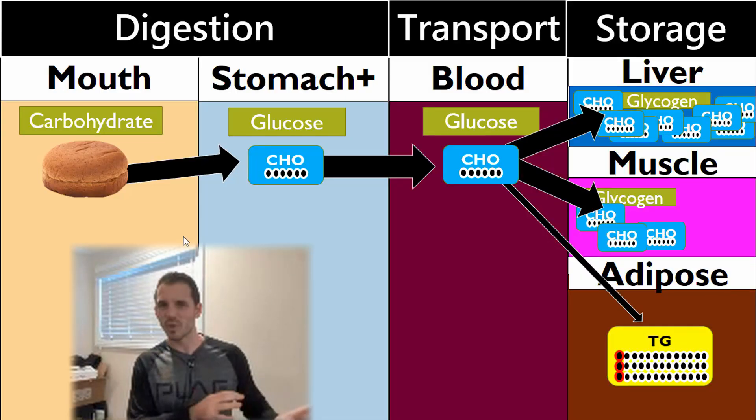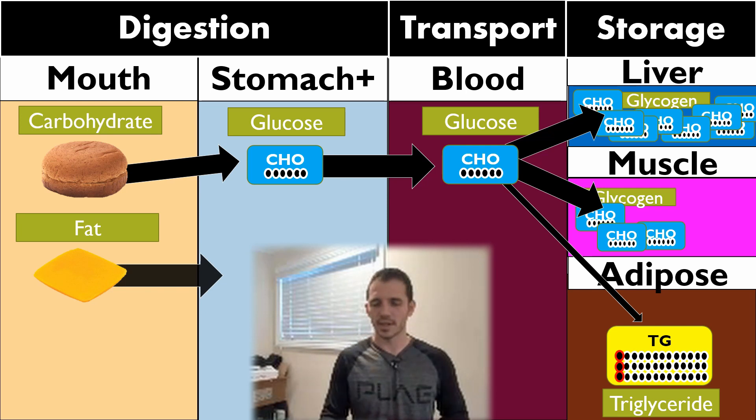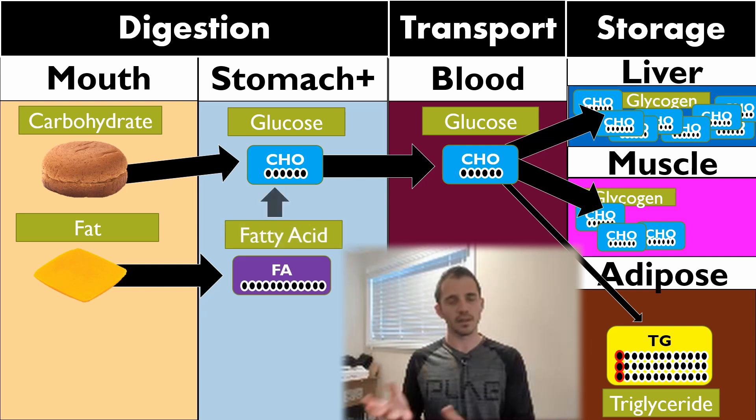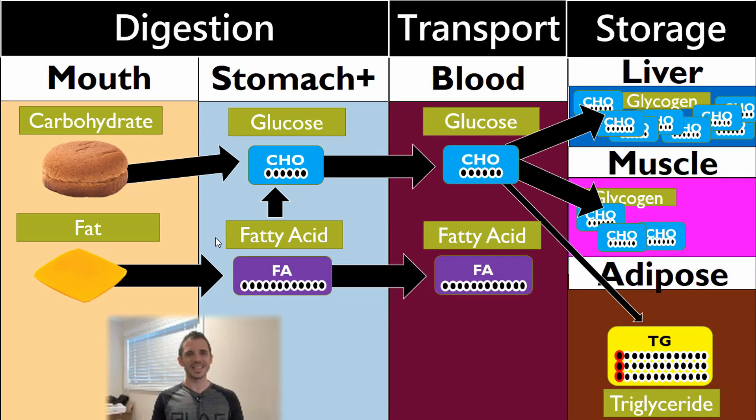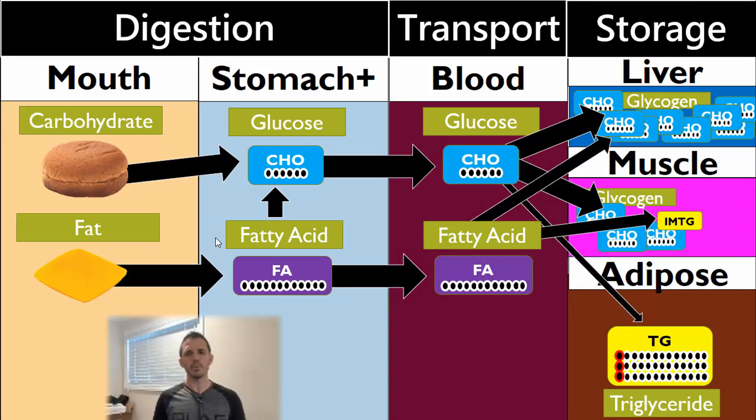If you take fat and ingest it, that's going to leave your stomach in the form of free fatty acids. It's going to enter your blood, and you'll store those in a handful of places. You can convert some fatty acids into glycogen through gluconeogenesis - the formation of new glucose from non-glucose molecules. You can store it in the muscle as IMTG, intramuscular triglyceride, which is positive for endurance performance, or store it as triglyceride in adipose tissue.